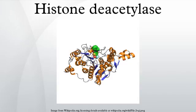In higher eukaryotes, HDACs are classified in four classes depending on sequence homology to the yeast original enzymes and domain organization. HDAC contains zinc and are known as zinc-dependent histone deacetylases. HDAC proteins are grouped into four classes based on function and DNA sequence similarity.